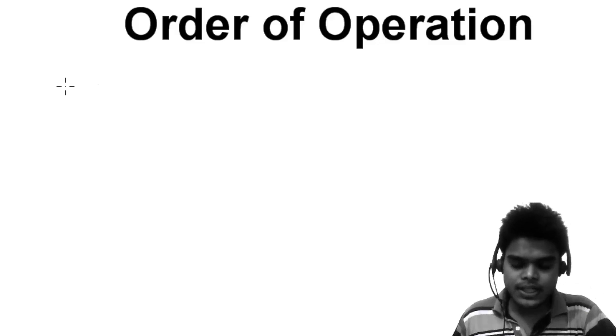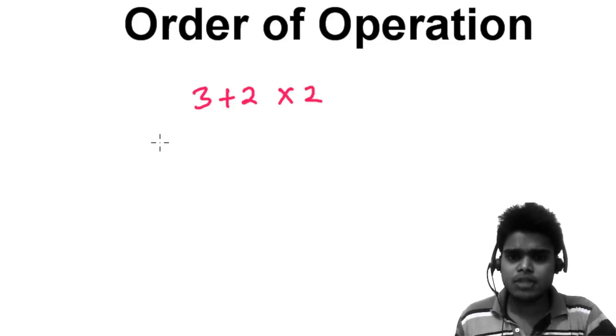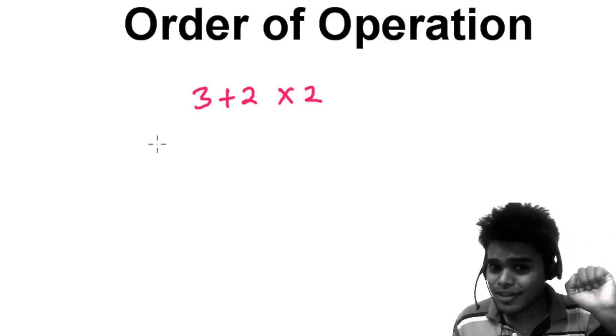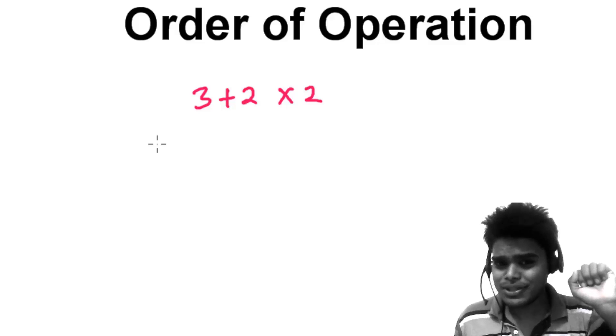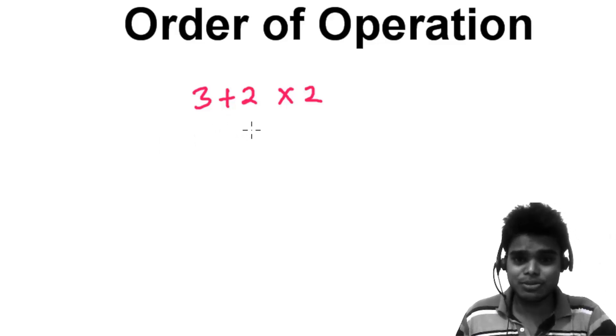In mathematics, things are laid out in a system. Let me give an example: 3 plus 2 times 2. Solve it and give me the answer in five seconds. I'm probably getting two answers from you guys.